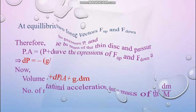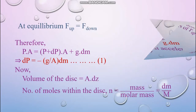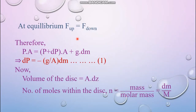At equilibrium, setting F_up equal to F_down: PA = (P + dP) × A + g × dm. The PA terms on both sides cancel, and after rearranging we get dP = −(g/A) × dm. This is equation number 1.